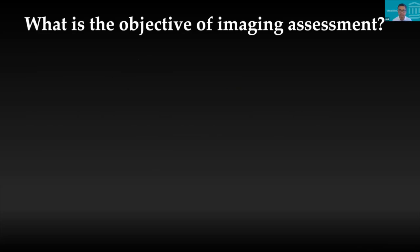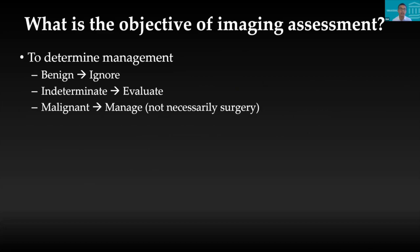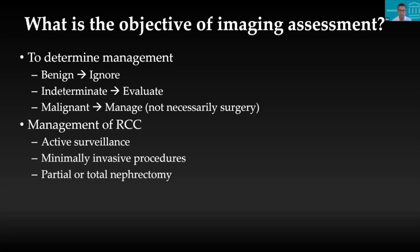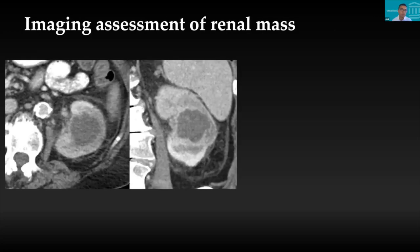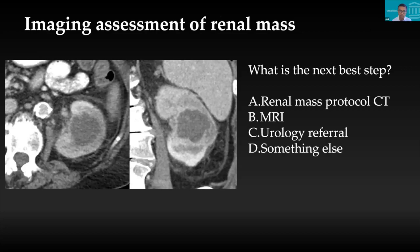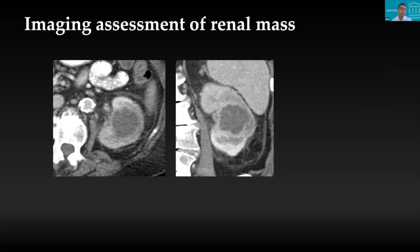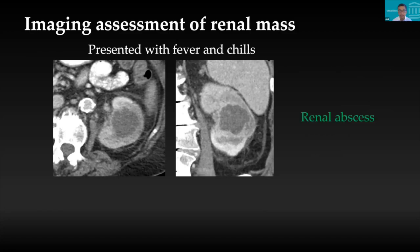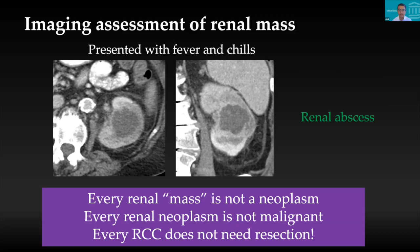When we assess these masses on imaging, the most important objective is to determine management: if benign, ignore them; if indeterminate, evaluate them; if malignant, manage them — not necessarily with surgery, as management could be active surveillance, minimally invasive procedures such as ablation, or partial or total nephrectomy. An important take-home: every renal mass is not a neoplasm. Even if it is a neoplasm, it may not be malignant, especially small renal tumours. Even if it is RCC, it may not need resection.